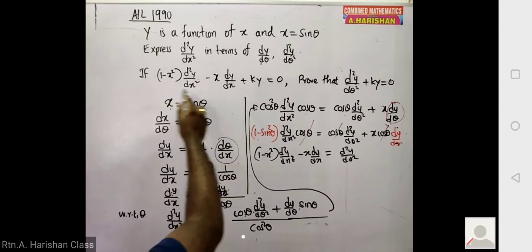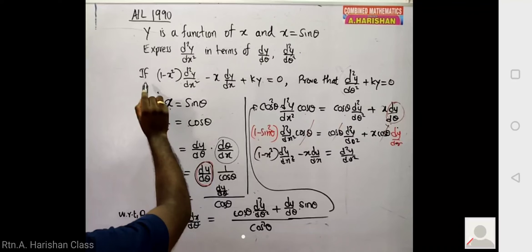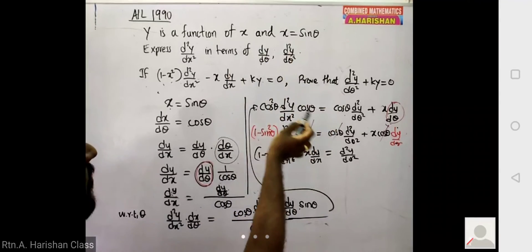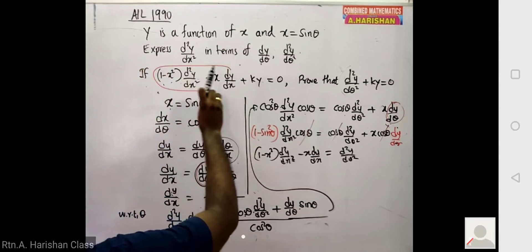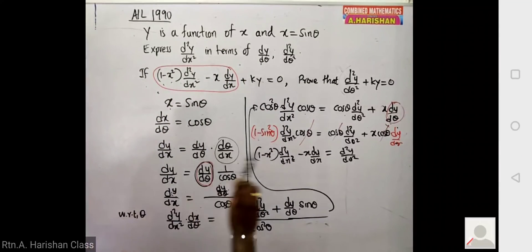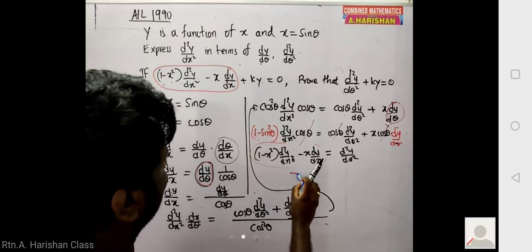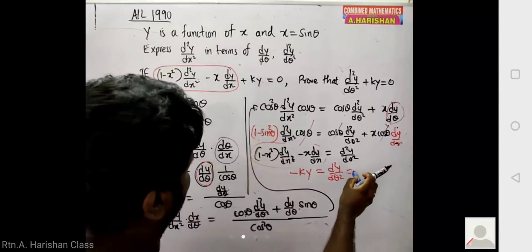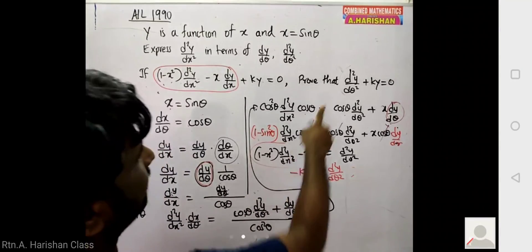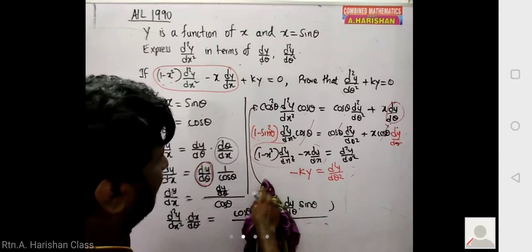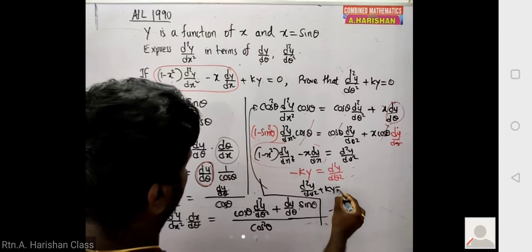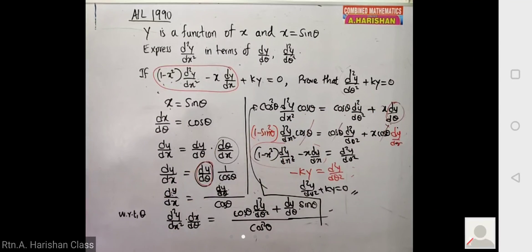Now we compare with the given equation: (1 minus x²) d²y/dx² minus dy/dx plus ky equals 0, which gives d²y/dθ² equals minus ky. Therefore, substituting back, d²y/dθ² plus ky equals 0. This is the required result — a 1990 exam question, and this is the end of the solution.